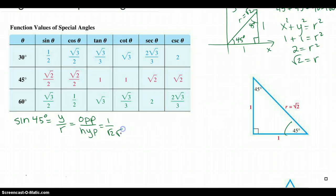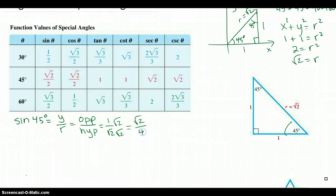How do you rationalize? You multiply top and bottom, from your algebra days, by square root of 2. So this would be square root of 2 over square root of 4, which is just 2. So sine of 45 degrees equals square root of 2 over 2.